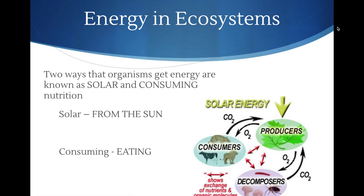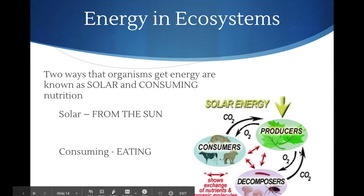There are two ways that organisms get energy: one is from solar energy, and the other is from consuming nutrition. Solar energy obviously comes from the sun, and only certain types of organisms can use it — you and I are not among them. The other way of getting energy is to consume food, which is what most organisms do. The only organisms able to get energy from the sun are plants that have chloroplasts and perform photosynthesis. Solar energy comes into the producers — your plants — who then produce energy that other organisms eat and cycle through the ecosystem.